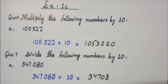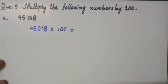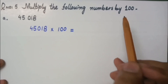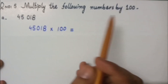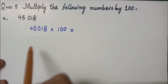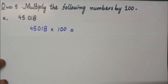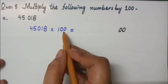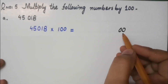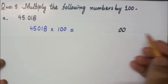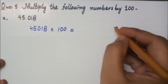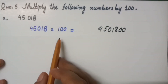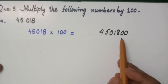Again, applying the same multiplication rule — this time by 100. In question number 5, multiply the following numbers by 100. The digit we have is 45,018. We have to multiply this by 100. First, write zeros to the right. How many zeros? We have two zeros, so we write two zeros to the right, then the digit to the left: 8, 1, 0, 5, 4. So what we got after multiplication is 4,501,800.